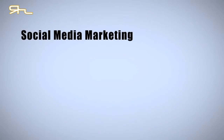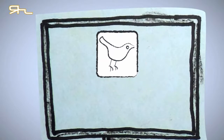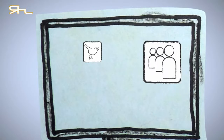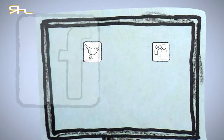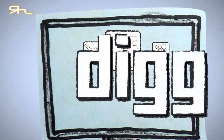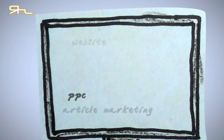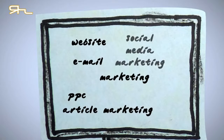Finally, there is social media marketing, which can involve social networks like Twitter, LinkedIn, Facebook, and social bookmarking sites like Digg. So as you can see, there are many parts to internet marketing to consider. We will cover these in more depth later.